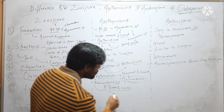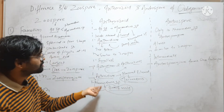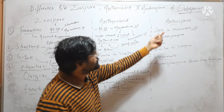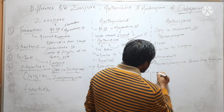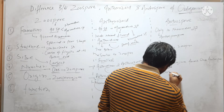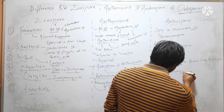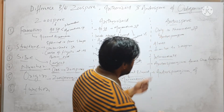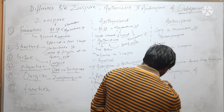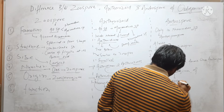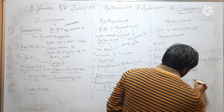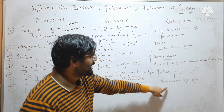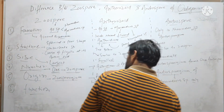Antherozoids are produced by dwarf male or Nanoandrium in case of Nanoandrous species. Androspores are produced inside Androsporangium of Nanoandrous species only, and they are formed inside Androsporangium.